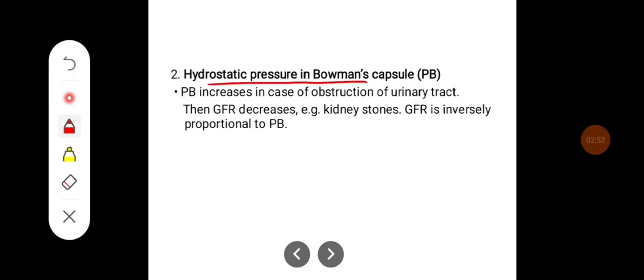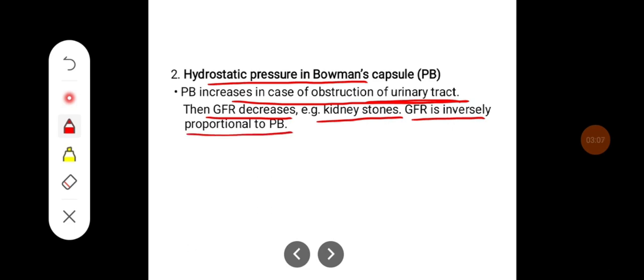The hydrostatic pressure in Bowman's capsule increases in case of obstruction of the urinary tract, such as kidney stones, and GFR decreases. GFR is inversely proportional to the hydrostatic pressure in Bowman's capsule.